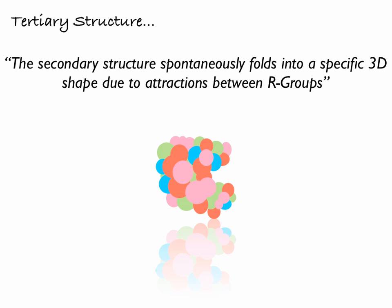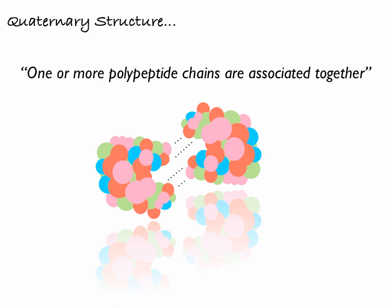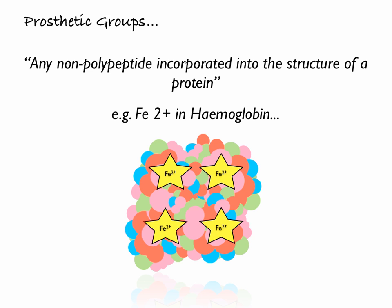The quaternary structure is where one or more polypeptide chains are associated together — separate chains attracted to one another that work as one molecule. A good example is haemoglobin. Haemoglobin has four subunits — two lots of two different polypeptides — each with an Fe2+ ion, a heme ion, integrated within it. That Fe2+ is a prosthetic group, which is any non-polypeptide component incorporated into the structure of a protein. So those are the four levels of protein structure along with prosthetic groups.